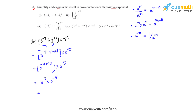The bases are the same and in multiplication, so the powers get added: 3 raised to 3 plus negative 5, giving 3 raised to negative 2. Since the power is negative, we write this as 1 over 3, whole raised to 2. That's how we solve the fourth problem.